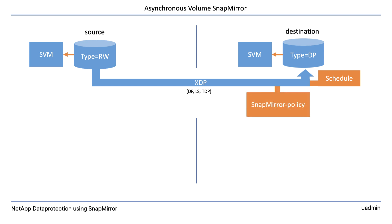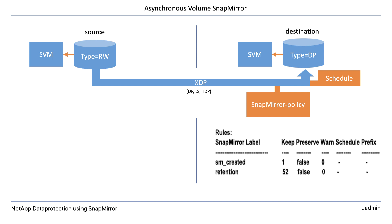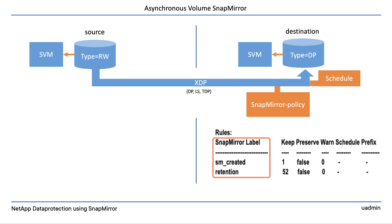Another vital element is the SnapMirror policy that is connected to the relationship. A SnapMirror policy can have multiple rules. In these rules, the important fields are the Keep parameter, which defines how many snapshots to keep on the destination, and the SnapMirror label field, which defines that during an update, the source volume will be scanned for snapshots with that label.